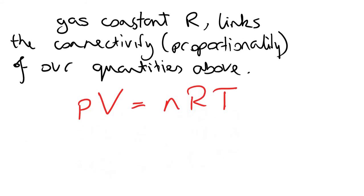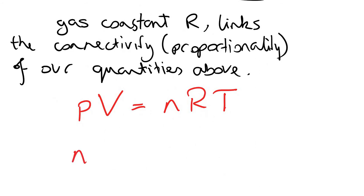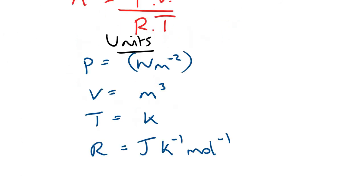Rearranging PV = nRT, you can see that the number of moles in any given system — providing the gases behave like ideal gases — is equal to the pressure of that system times the volume divided by the gas constant R times temperature in Kelvin. They all have specific units: pressure is in Newtons per meter squared (Pascals), volume is in meters cubed, temperature is in Kelvin, and the gas constant is in Joules per Kelvin per mole. You can also convert between Pascals and kiloPascals as a unit for pressure.